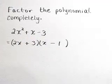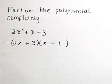And so we do have the complete factorization. 2x plus 3 times x minus 1.